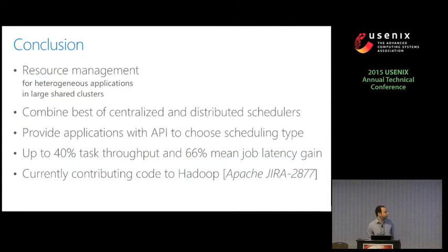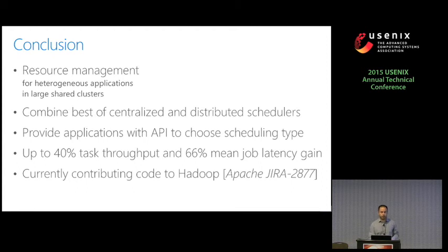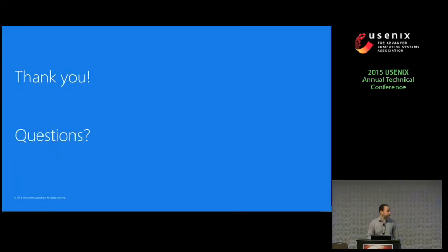To conclude what I've talked about today: we are targeting resource management for heterogeneous applications in large shared clusters. I have shown a way of combining the best of both centralized and distributed schedulers. We provide applications with Mercury an API to choose the scheduling type based on their needs. We saw up to 40% task throughput win and up to 66% average job latency win. We are currently contributing our code to YARN in Apache Hadoop, and we gave a longer version of this talk at Hadoop Summit. Thank you — I'll be happy to take any questions.